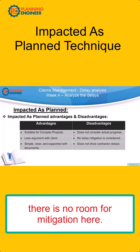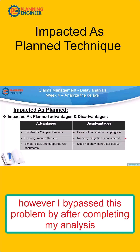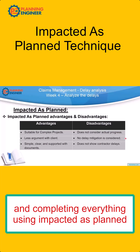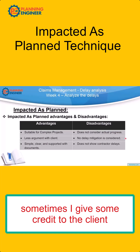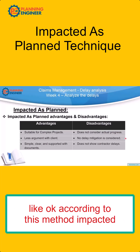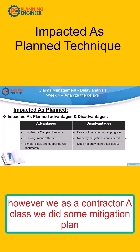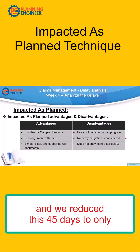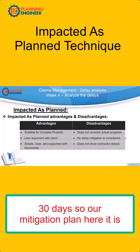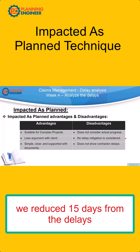When using Impacted as Planned, there is no room for mitigation built in. However, I bypass this problem by, after completing my analysis using Impacted as Planned, giving some credit to the client. For example: according to this method I am entitled to 45 days, but as a contractor we implemented a mitigation plan and reduced it to only 30 days — meaning we absorbed 15 days of delays through mitigation.